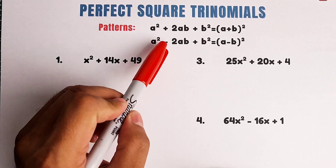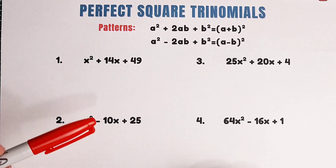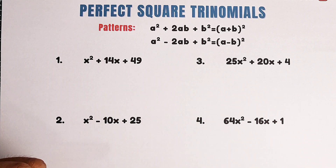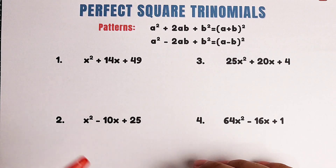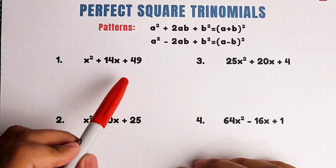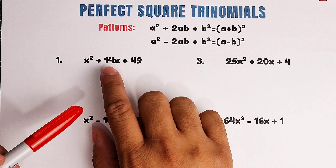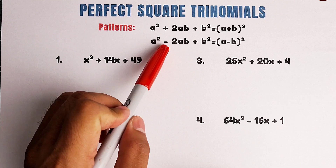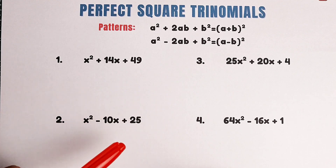Now basically, this is the pattern on how to factor out perfect square trinomials. The problem is how we're going to recognize whether a given trinomial is a perfect square trinomial. First, check if the first term is a perfect square. Second, check if the third term is also a perfect square. Then also check if the middle term has the value of positive or negative 2ab, wherein we multiply the square roots of the first term and the third term, and then multiply by 2.